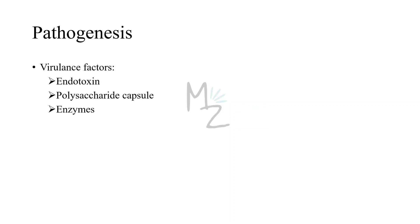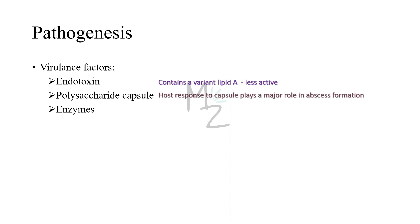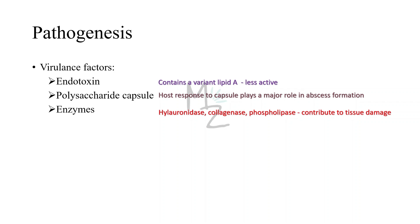The virulence factors in detail: the endotoxin released by Bacteroides Fragilis — the Bacteroides Fragilis toxin — contains a variant lipid A that is missing one of the fatty acids, and consequently is a thousand-fold less active than the typical endotoxin of bacteria such as Neisseria meningitidis. The second virulence factor is its polysaccharide capsule — the host response to the capsule plays an important role in abscess formation. The third virulence factor is the enzymes released: hyaluronidase, collagenase, and phospholipase, which contribute to tissue damage.